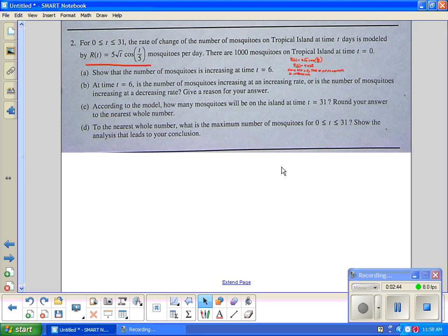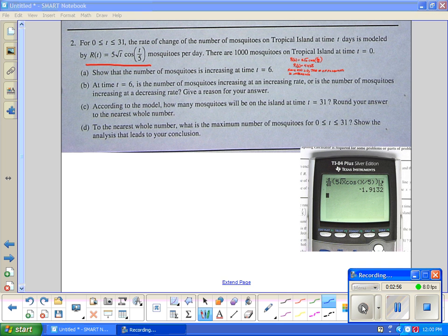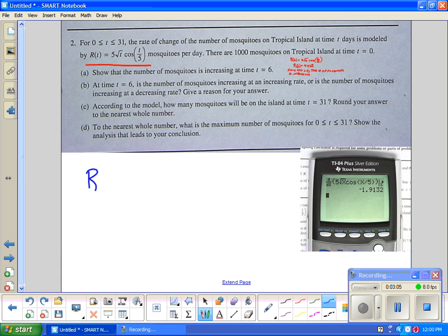This is something your calculator will do. If you go to math, there's a derivative button. We need to do the derivative, the rate of change of the rate of change. We would write this as R'(6). The value came out to be negative 1.9132. What would the units be? Mosquitoes per day squared.